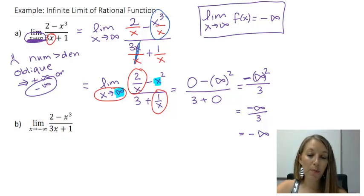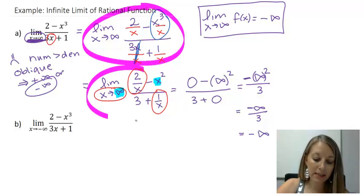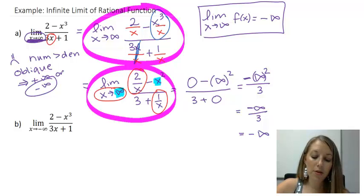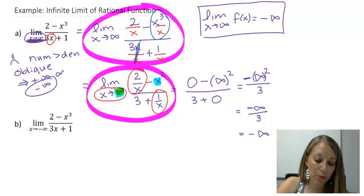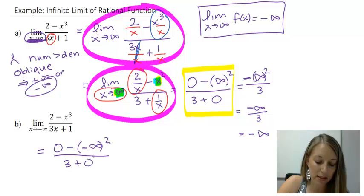Now when I do the work for part b, it's mostly going to look the same. My first step is going to look the same. My second step is going to look the same. The only thing different is I'm not going to plug in positive infinity for my x. I'm going to plug in a negative infinity. So this is the step that I'm going to start at. I have 0 minus, I substitute in a negative infinity squared over 3 plus 0.